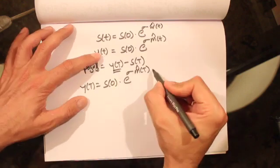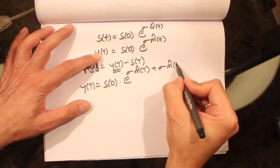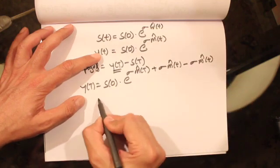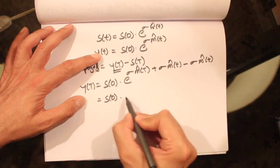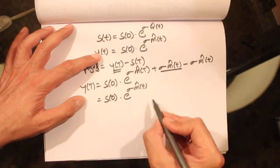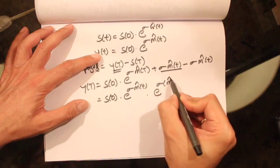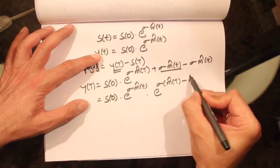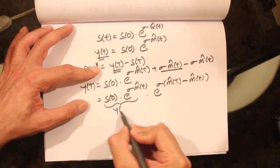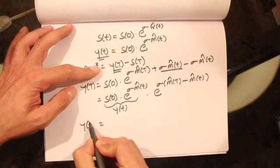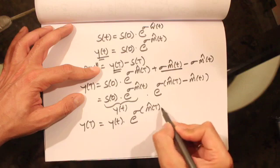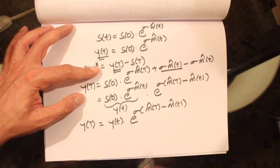We can do a little manipulation here: we add and subtract sigma m̂(t). If we do that, we can write this term as S0 times e to the power of sigma m̂(t), which is y(t), multiplied by e to the power of sigma times (m̂(T) minus m̂(t)). So y(T) can be written as y(t) times e to the power of sigma times (m̂(T) minus m̂(t)).